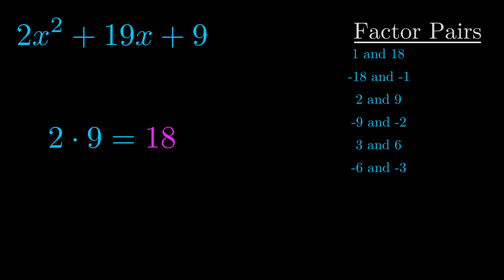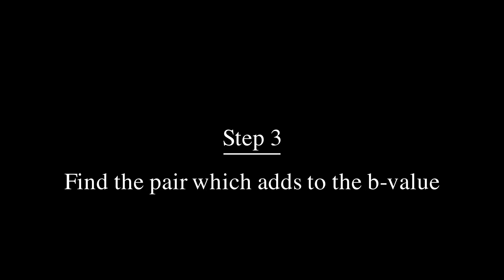Now once you have these factor pairs, the goal is to find which of these pairs adds to the b value. The b value is the coefficient on the x term.